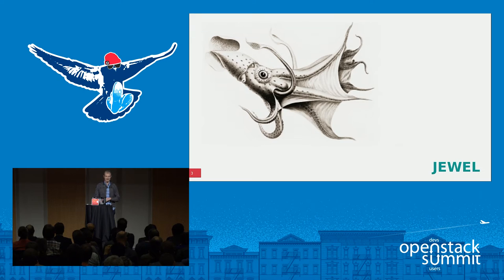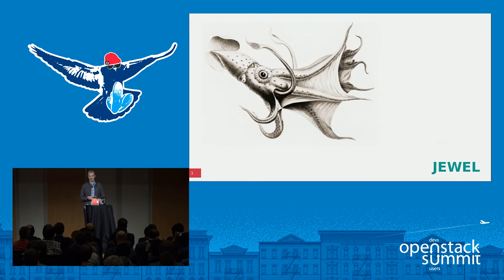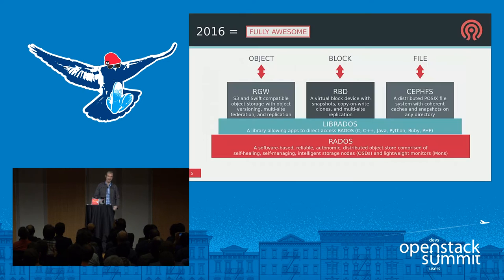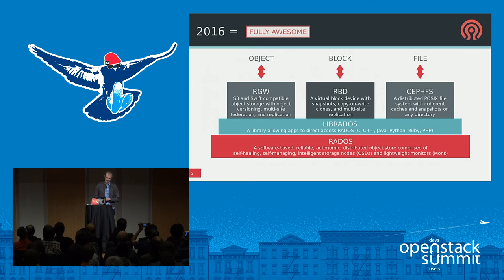The current release of Ceph is Jewel, it came out in the spring. We actually started working on Ceph over 10 years ago — it was originally designed as a distributed scale-out file system. One of the frustrating things over the past five years was that we had a stable object and block interface but not a stable file system yet. The big milestone with Jewel is that we can now declare Ceph fully awesome — the file system is fully stable and ready for production.